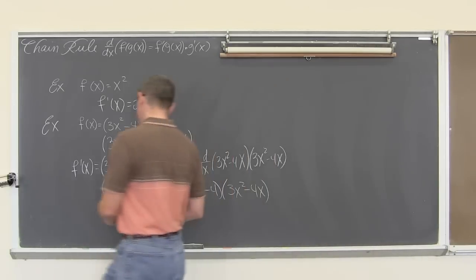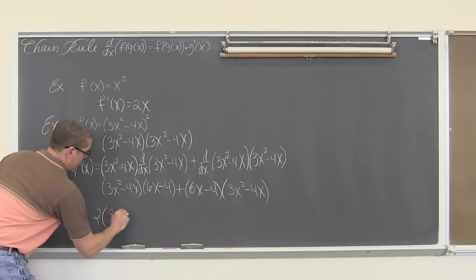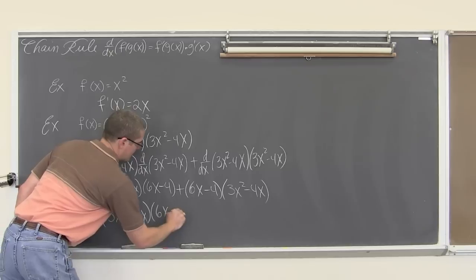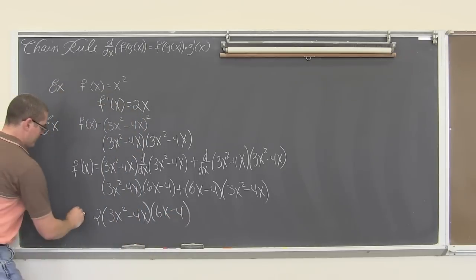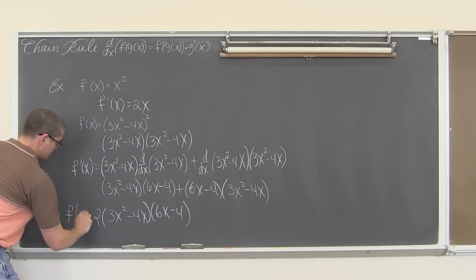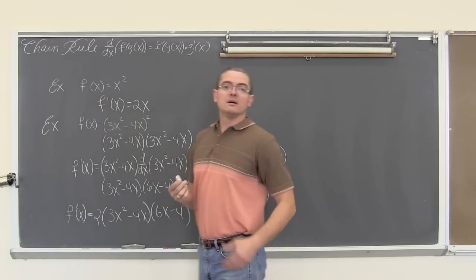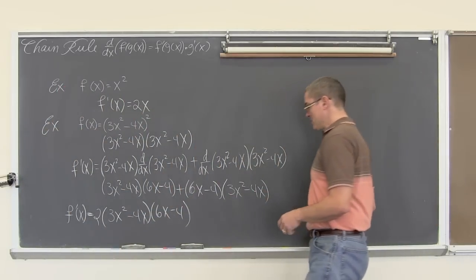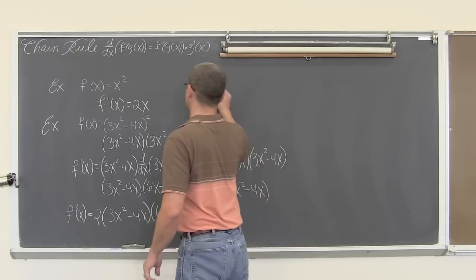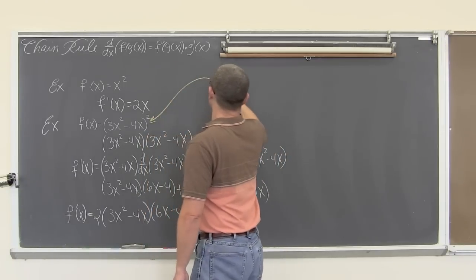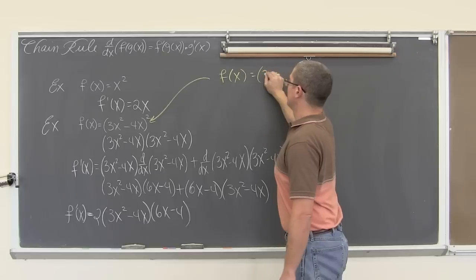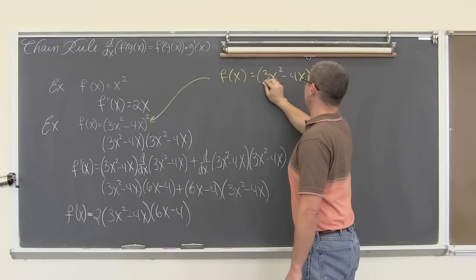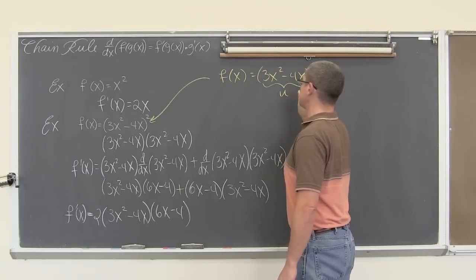This comes out to be 2 times 3x squared minus 4x times 6x minus 4. So now that I have found the derivative using the rule that we already know, let's apply the chain rule and see what happens. So we are going to use this example again: f of x is equal to (3x squared minus 4x) squared. This portion is my u — that is the function inside the other function.